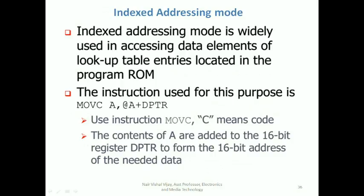The other addressing mode is indexed addressing mode. In indexed addressing mode, it is used to access data elements from a lookup table. A lookup table is used for operations like rotating a stepper motor or complex operations like a seven-segment display, where you use many values in a sequence or array. When using a lookup table, it is always preferable to use indexed addressing mode. The notation is MOVC A, @A+DPTR — meaning whatever data is in the accumulator is added with the data pointer, and the combined value forms an address from where the data is moved to the accumulator.